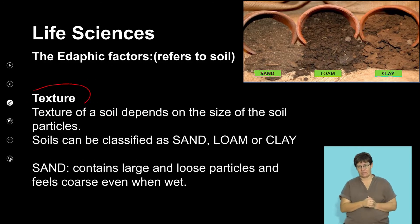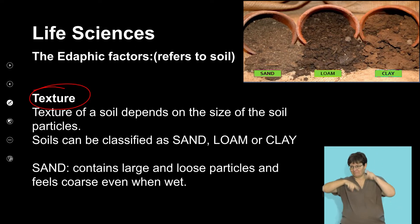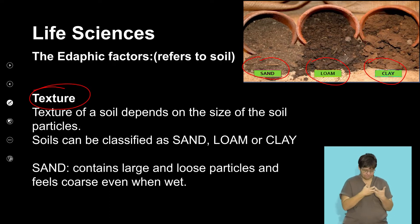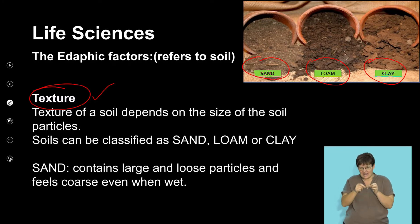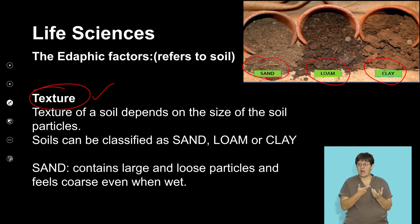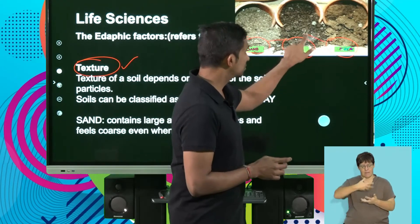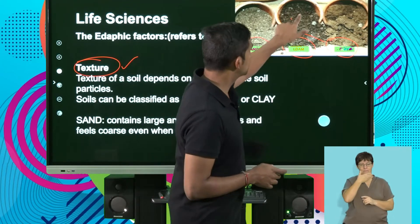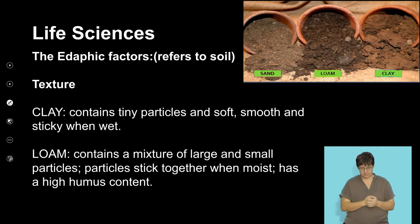The next edaphic factor is the texture. Based on the texture of soil we have different types: sandy soil, loamy soil, and clay. Clay has extremely fine soil particles that tend to stick together. Sand has coarse and rough particles that tend to be easily separated. Loam is a mixture of sand and clay with a rich humus content — of the three, this is the most suitable form of soil that supports life forms.